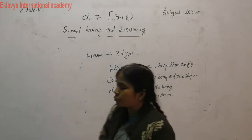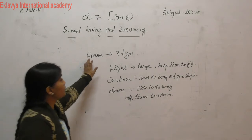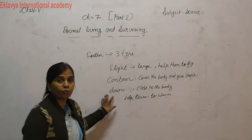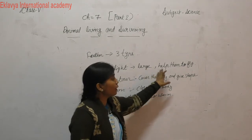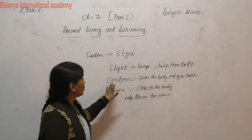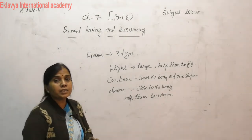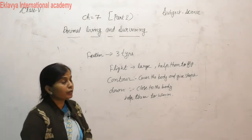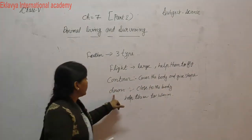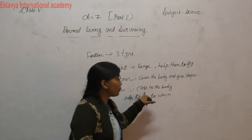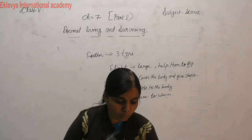So, to summarize: feathers are three types — flight feathers, contour feathers, and down feathers. Flight feathers are large and help the bird to fly. Contour feathers cover the body and give its shape. Down feathers grow close to the body and help keep the bird warm.